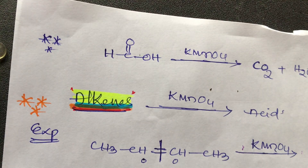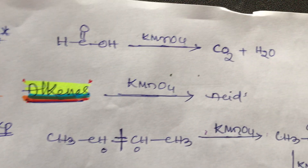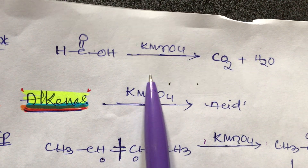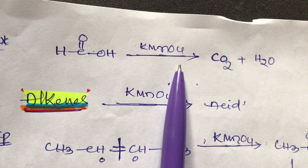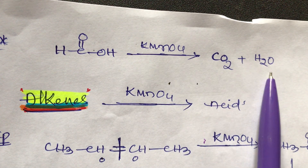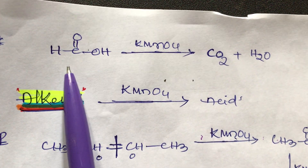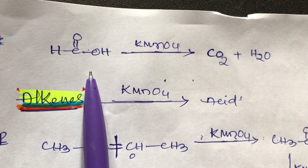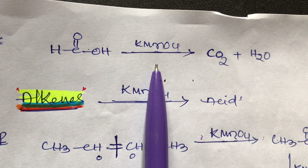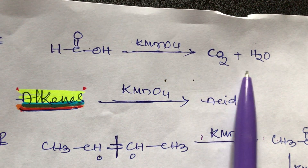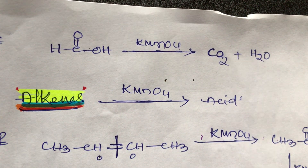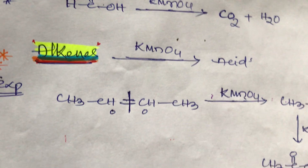Formic acid is also oxidized with KMnO4 to give carbon dioxide plus water. This is also a very important reaction.